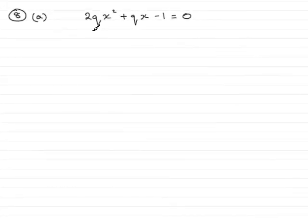Now in question 8 part a, we're given this quadratic equation 2qx squared plus qx minus 1 equals 0, and we're told that it has no real roots.